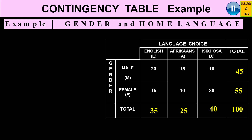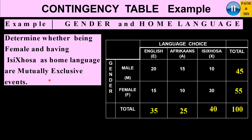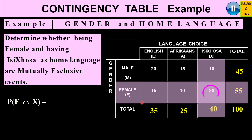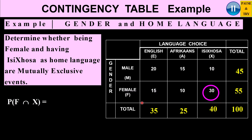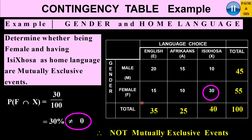Now let's determine whether two events are mutually exclusive — in this case, female and Isizulu. The probability of female intersection Isizulu: looking at the table, there are 30 females whose home language is Isizulu. So the probability is 30 over 100, which is 30%. For mutually exclusive events, this probability should be 0. Because it's not equal to 0, we deduce that these two events are not mutually exclusive.